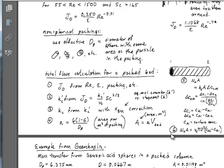The total rate of mass transfer in moles per second equals the volumetric flow rate — velocity multiplied by cross-sectional area — times the concentration difference between inlet and outlet. This gives an equation to solve for the unknown exit concentration. For a given bed length, packing properties, and flow characteristics, if the inlet concentration and interfacial concentrations are known, you can determine the outlet concentration leaving the bed.